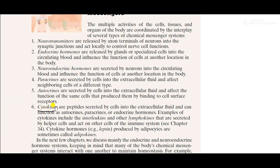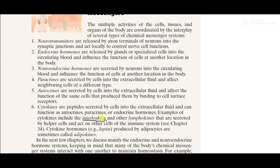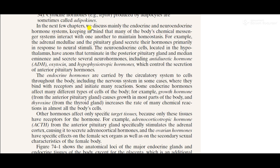Cytokines are peptides secreted by cells into the extracellular fluid. They can function as autocrines, binding to receptors on their own cell membrane; as paracrines, affecting neighboring cells; and also as endocrines, influencing the function of cells at another location in the body. Examples of cytokines include interleukins and other lymphokines secreted by helper T cells, which act on other cells of the immune system. Leptin, produced by adipocytes, is an example of a cytokine hormone and is sometimes called an adipokine.